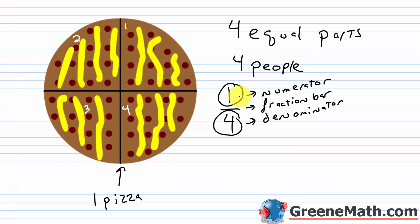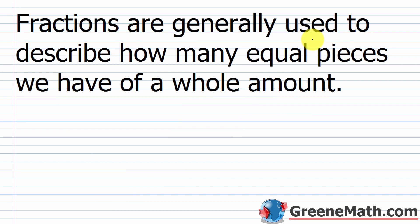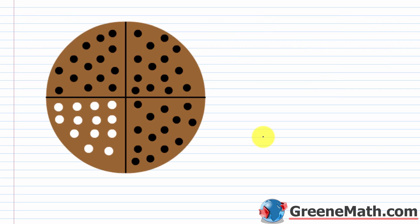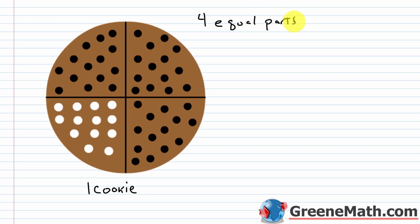In this scenario where there's a total of four people and four equal slices, each person gets one slice out of four, or one fourth of that whole pizza. Fractions are generally used to describe how many equal pieces we have of a whole amount. Now let's look at this cookie — it represents our whole amount. You'll notice it's split up into four equal parts, and three of the parts have chocolate chips while one part has macadamia nuts.